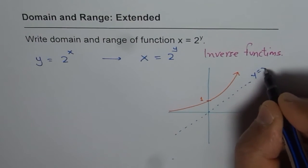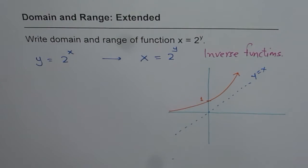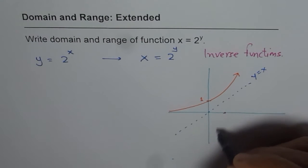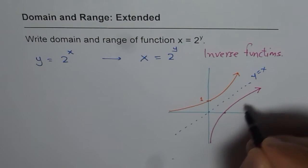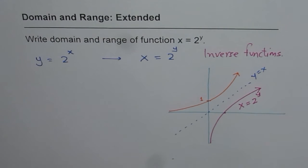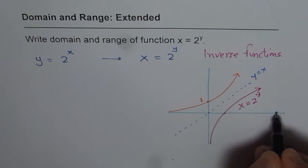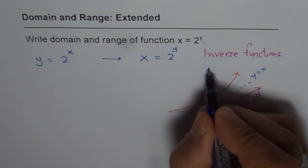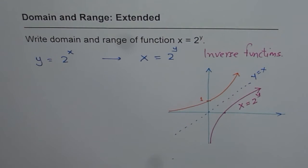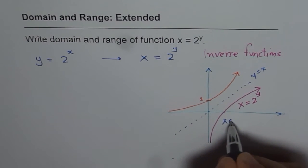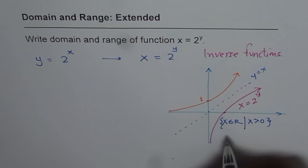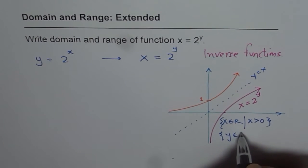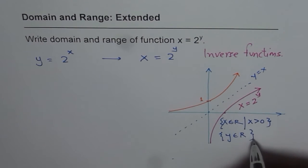Now reflecting it on the line y equals x gives the inverse. We are solving this question without the knowledge of logarithmic functions. That reflected curve becomes the function x equals 2 to the power of y. You can now write the domain and range. For this function, x takes all values greater than 0, and y is all real numbers. So the domain is x belongs to real numbers where x is greater than 0, and the range is y belongs to real numbers with no restriction.